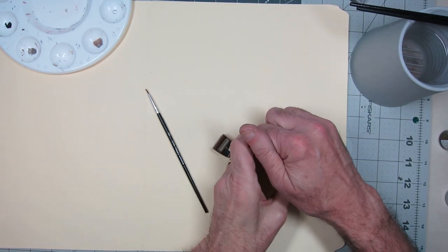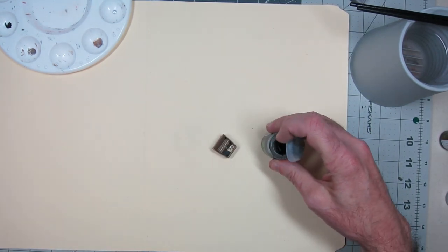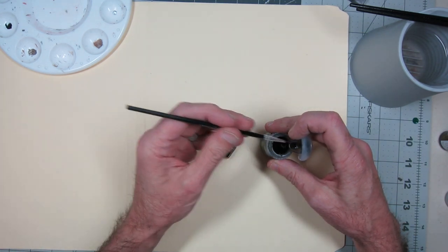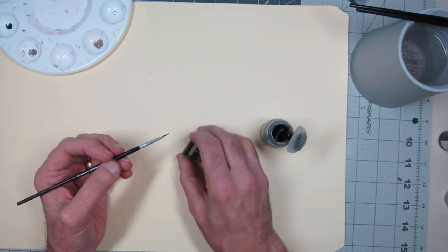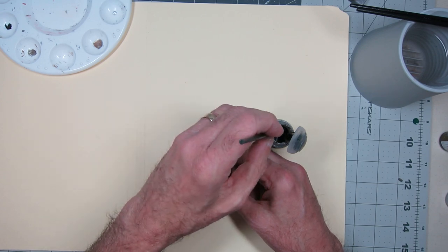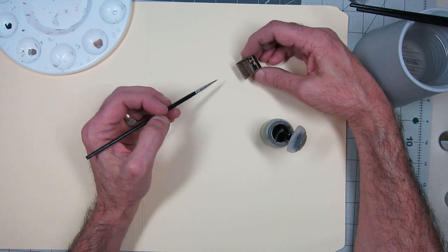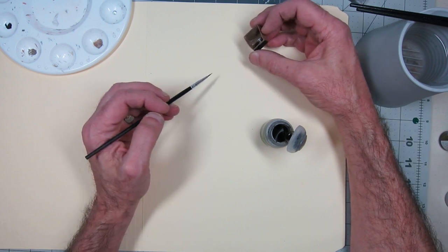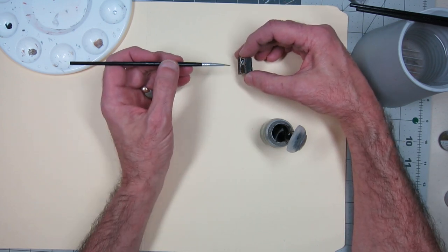Once I had done the basic details on the interior, it was time for the Nuln Oil. That just gives depth to that interior. I wanted to bring out the folds in the seats. Kind of looked like an old tuck-and-roll interior.